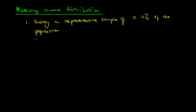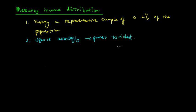That's the first step in the measuring income distribution process. The second step is that after they've gathered the data, they organize it ascendingly — from poorest to richest. After surveying the 0.2% of households, they organize them from the poorest household to the richest. This can take a while because 0.2% of the population is still a very large number.